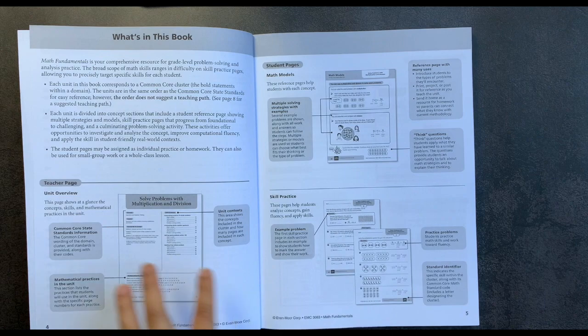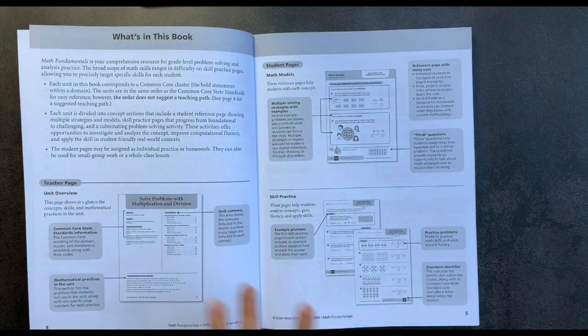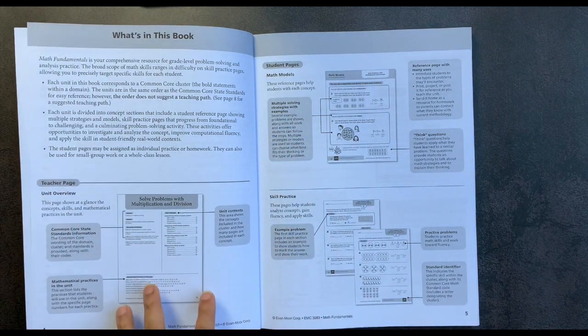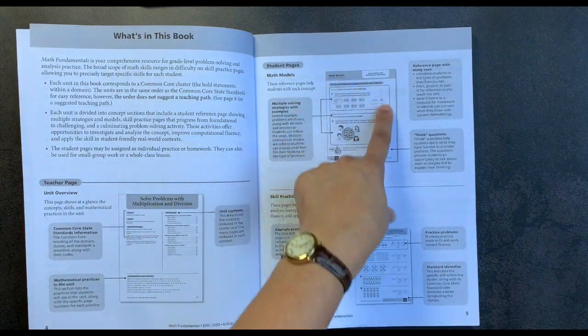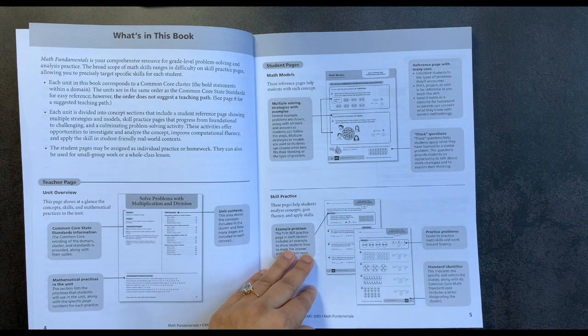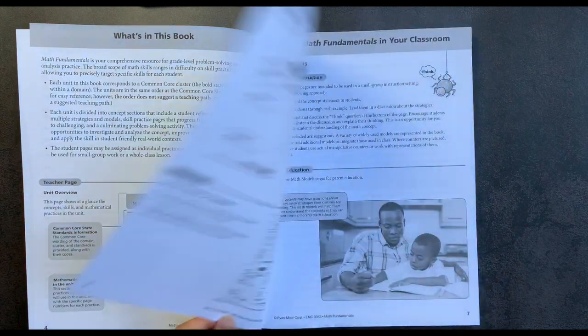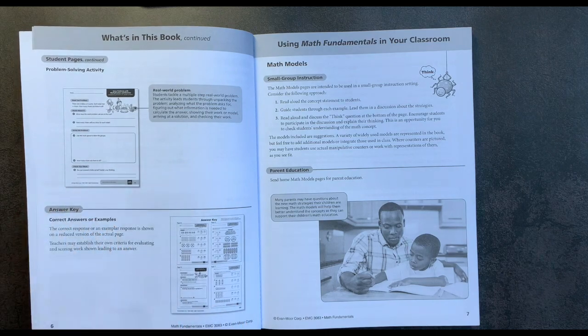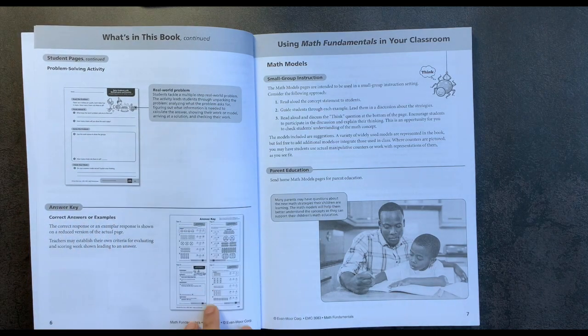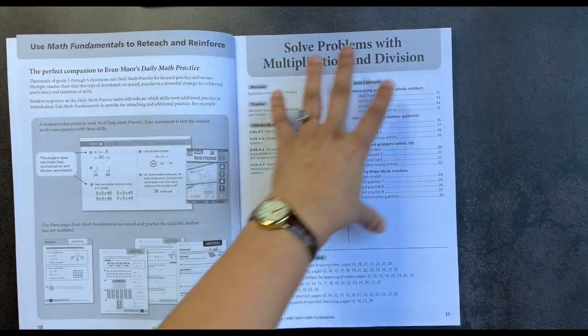You have a teacher page with a unit overview and then you have student pages that include math models within these boxes which are examples of the problems that they might be seeing, and then you have skills practice for the student. There are also problem solving activities at the end of each of the units and a complete answer key. So for example, if we go to the first section here, solving problems with multiplication and division,